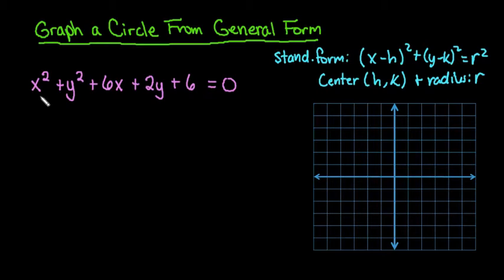So the first thing that we're going to do is we're going to group our x terms together. So I'm going to group x² + 6x, and then I'm going to add a blank behind this. I'm going to leave a little bit of a space behind this. And the reason that I'm going to do that is because I have to figure out what did I square in order to get this.